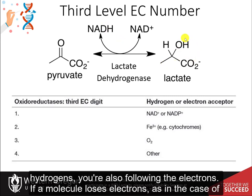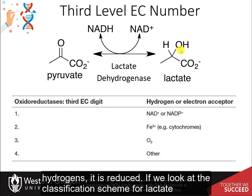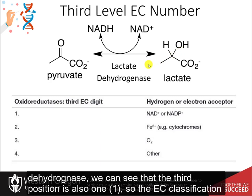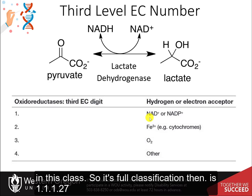If you follow the hydrogens, you are also following the electrons. If a molecule loses electrons — as in the case of lactate going to pyruvate — it becomes oxidized. If it gains electrons and the associated hydrogens, it is reduced. The third position is also 1, giving an EC classification of 1.1.1. The last digit for lactate dehydrogenase is 27, as it is the 27th enzyme characterized in this class, giving a full classification of 1.1.1.27.